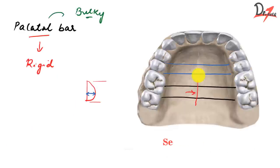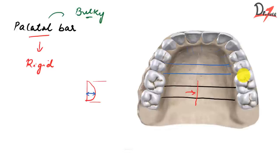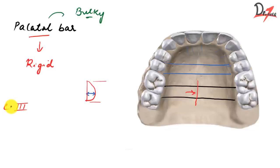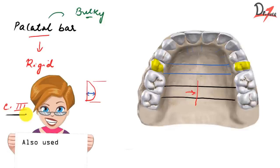This reliance on the teeth for support is a disadvantage, as it makes them bear the forces. Based on this design, the palatal bar is used in short-span Kennedy class 3 cases — where there are missing teeth with teeth both anterior and posterior to the gap — so the palatal bar can get support from those teeth. Its use is therefore limited to short-span class 3.